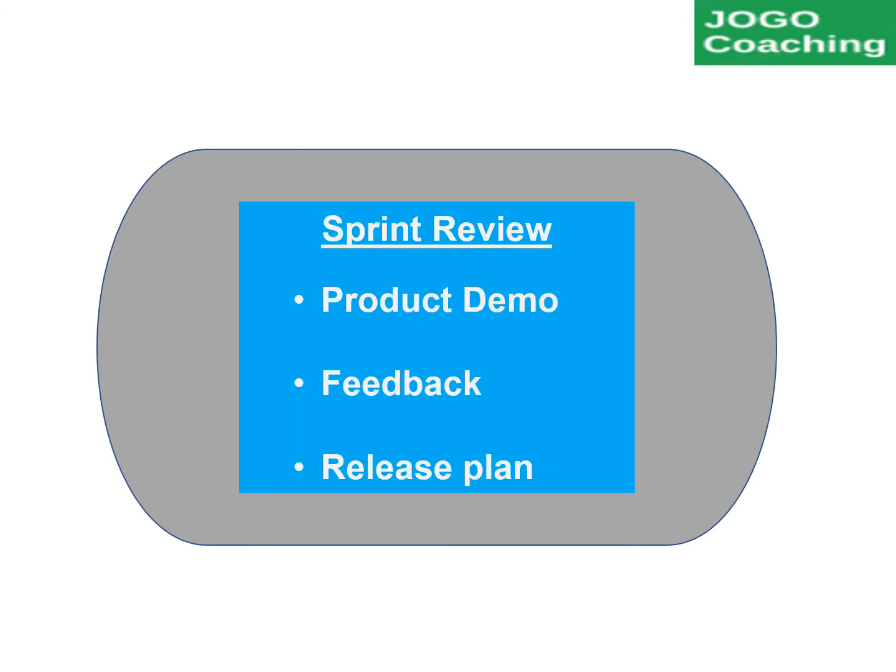The next event is the sprint review, which will happen at the end of the sprint cycle. The purpose of this meeting is to review the product. The team will showcase the product increment. Any issues or additional requirements raised in this review will go to the backlog for future planning.